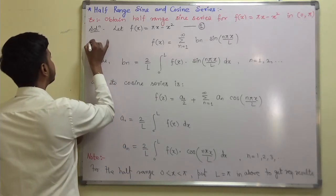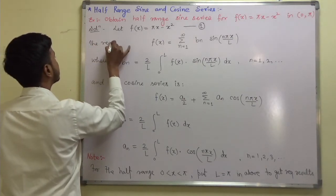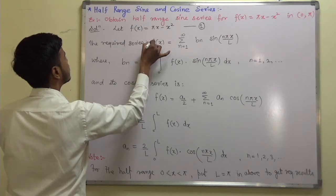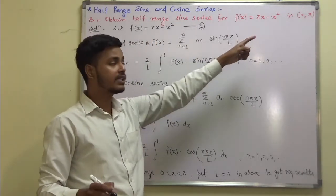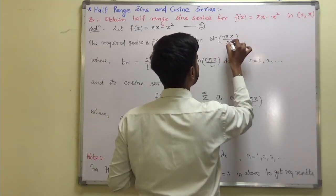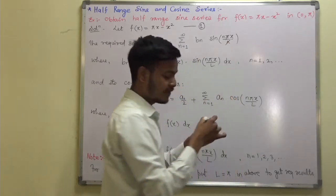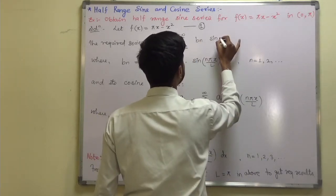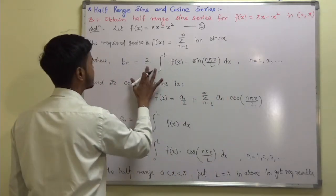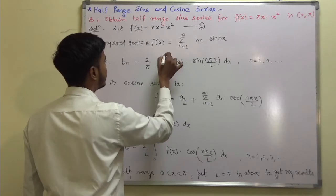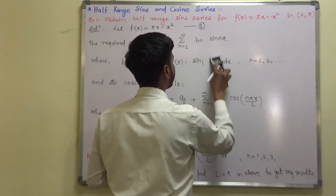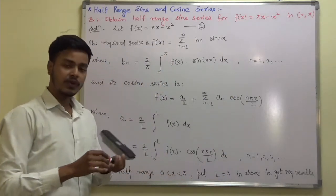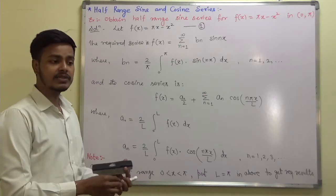The required series is f(x) = Σ (n=1 to ∞) bₙ sin(nx), since we have 0 to π (not l), so putting l = π the π's cancel and we remain with sin(nx). Here bₙ = (2/π) ∫₀^π f(x) sin(nx) dx. What we need to do is just find out bₙ.